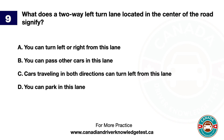Question 9. What does a two-way left-turn lane located in the center of the road signify? A. You can turn left or right from this lane. B. You can pass other cars in this lane. C. Cars traveling in both directions can turn left from this lane. D. You can park in this lane. The answer is C. Cars traveling in both directions can turn left from this lane.